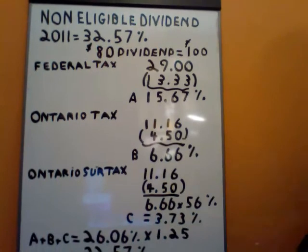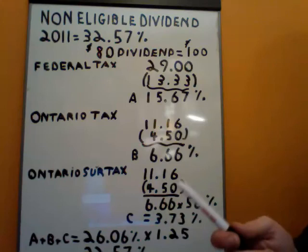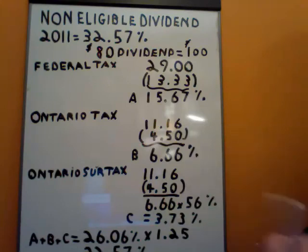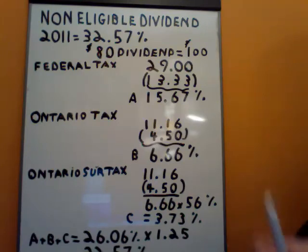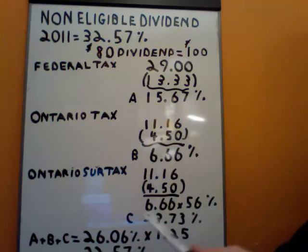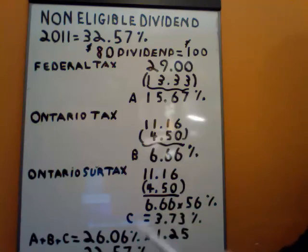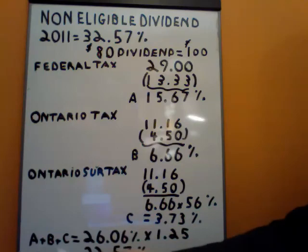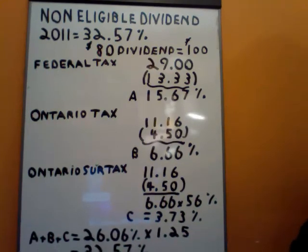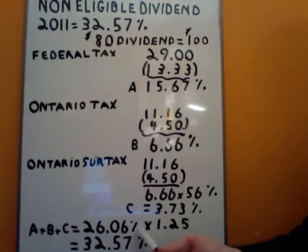56% is made up of two Ontario surtaxes: 20% and 36%. Once you have over $66,000 of Ontario surtax in Canada, you start to hit these Ontario surtaxes. So if we're dealing with the high margins in Ontario, we're going to definitely have an additional 56% of 6.66%. This number — 3.73% — is Part C. We add up A, B, and C, giving us a total of 26.06%.